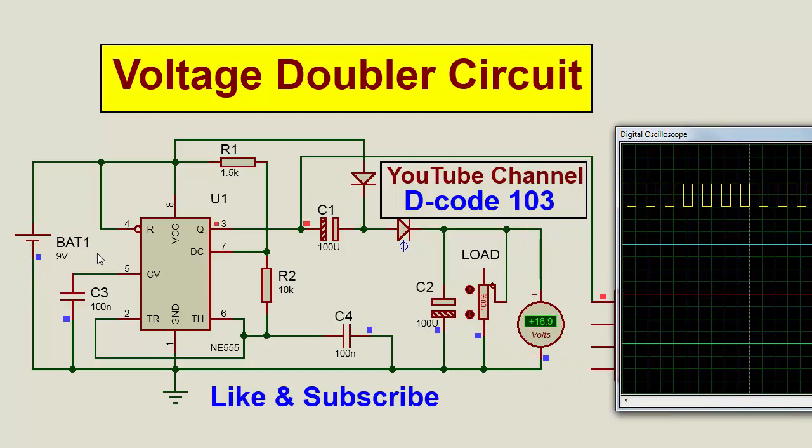The input voltage is 9 volts and the output voltage is around 16.9 volts. Or we can say this shows how to increase the input voltage using 555 timer.